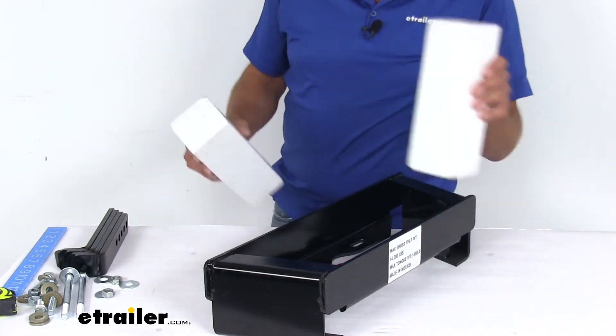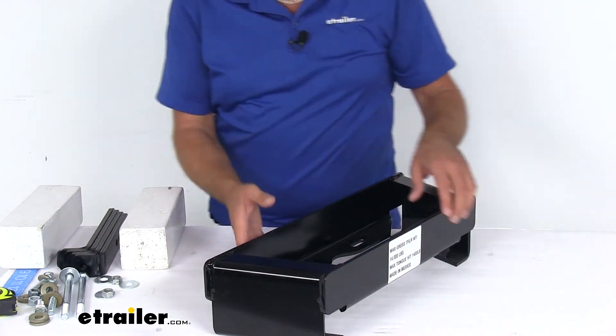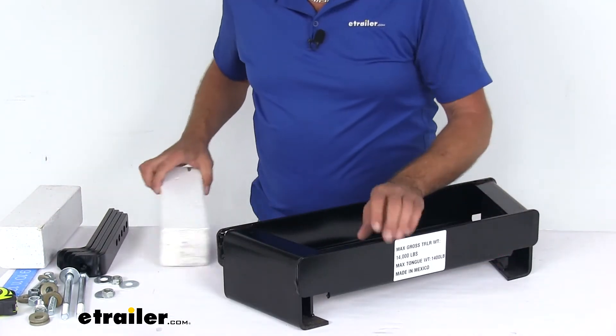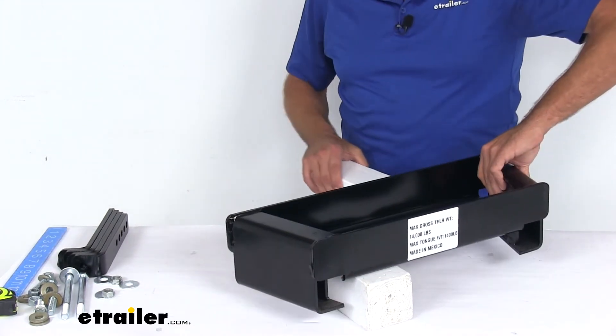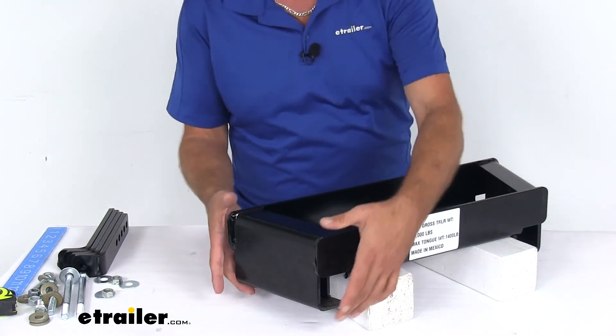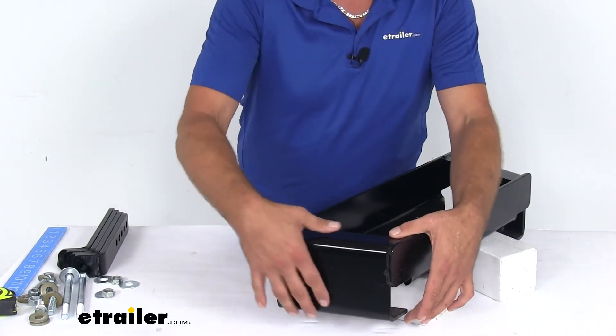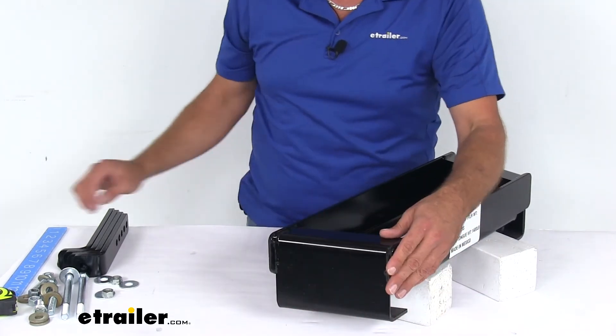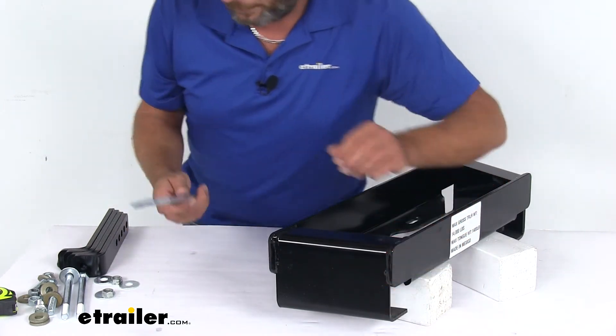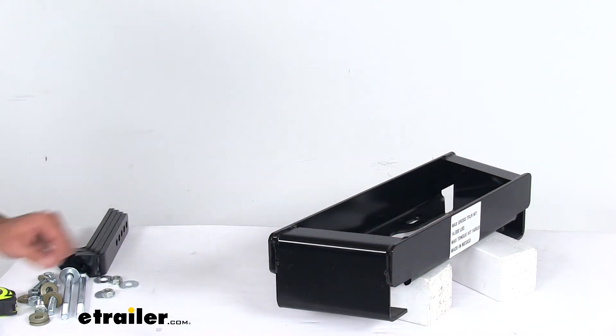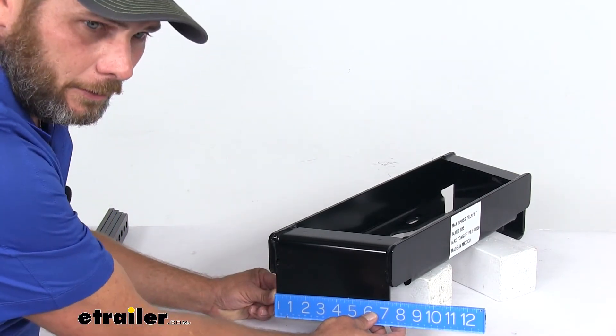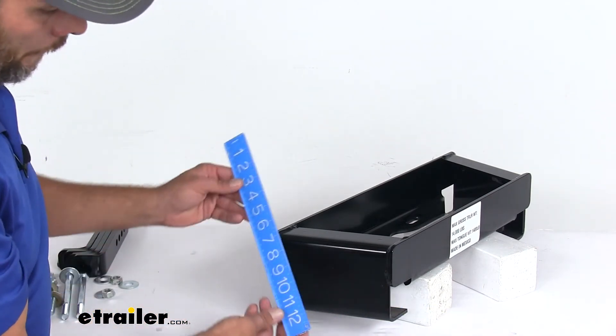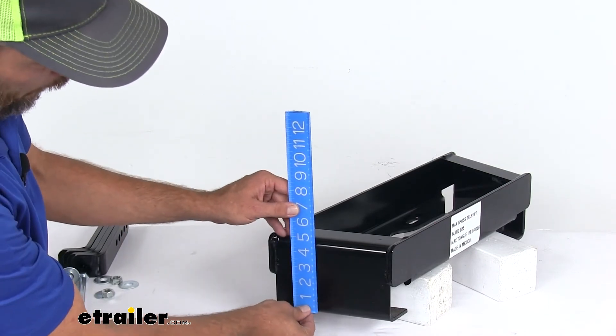Let me bring this down and get a look at the side of it. This is where our weight distribution system is going to connect. The usable portion is a little bit narrower than what we see at the top. That's going to be seven and a quarter inches wide and five inches tall.